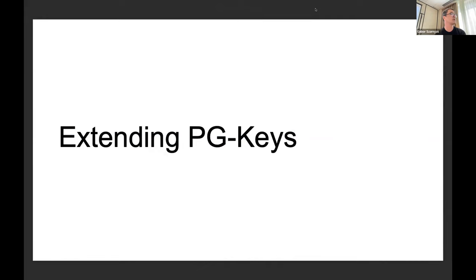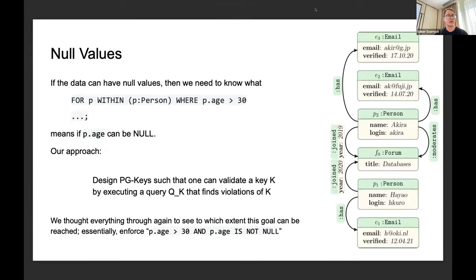We also looked ahead at different ways you might naturally extend PG-Keys. We had some in-depth discussion on how PG-Keys interact with nulls. If the data can have null values, then we need to know that when we check the scope, say finding people having a particular age, ages can be null. We have to have some way of reasoning about this and enforcing these constraints. Our approach is to design PG-Keys such that we can validate a given key k by executing a query that finds violations of k. We thought everything through again through the definitions to see to which extent the scope can be reached. Essentially, we have to enforce that p.age is not null, and then we can validate this with an appropriate query. More details are in our SIGMOD paper.